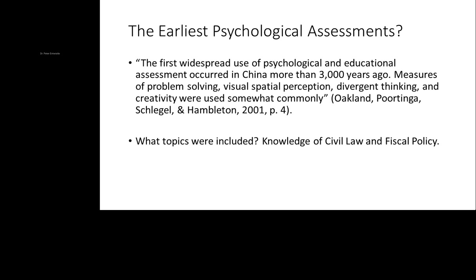Some of those tests were created to identify people who could be mandarins in Chinese culture. They were tested in civil law, military affairs, agriculture, revenue, and geography. Later there was a focus on the Confucian classics. Very few people passed those rather rigorous tests. As you can see, measures of problem solving, divergent thinking, and creativity were included — along with knowledge of civil law and fiscal policy — plus a requirement for good penmanship.